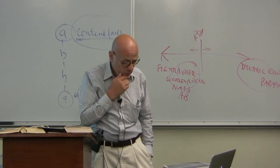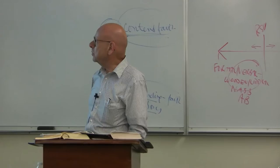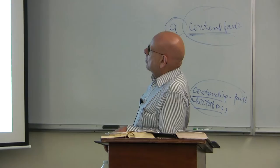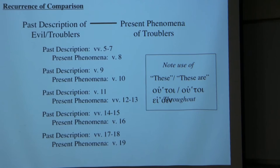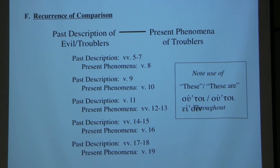We also have a recurrence of comparison. The past description of evil troublers is repeatedly compared to the present phenomena of the troublers, indicated by the repeated use of 'these' or 'these are.'